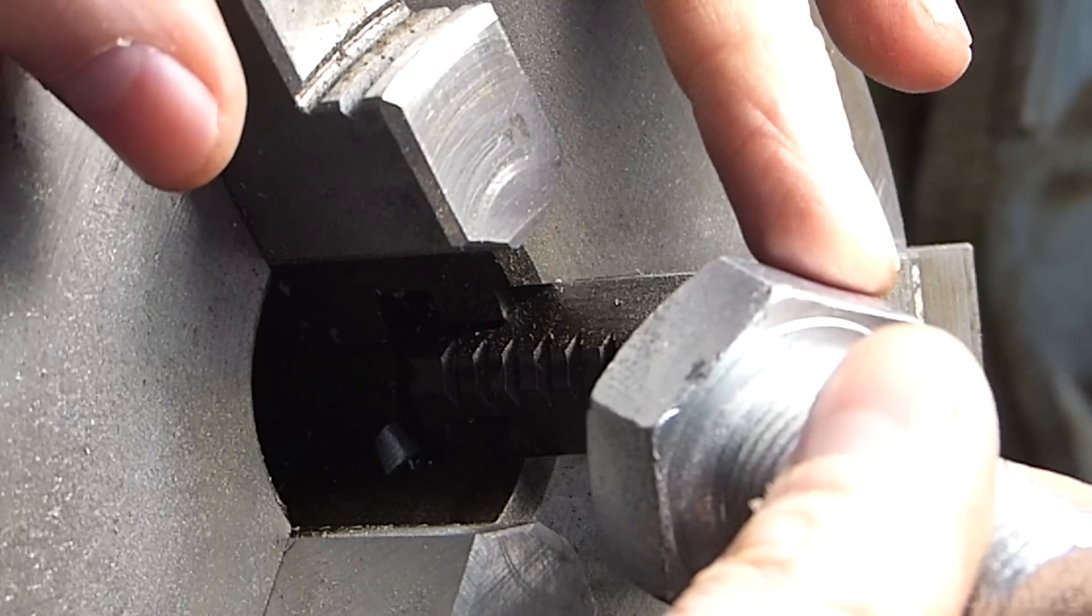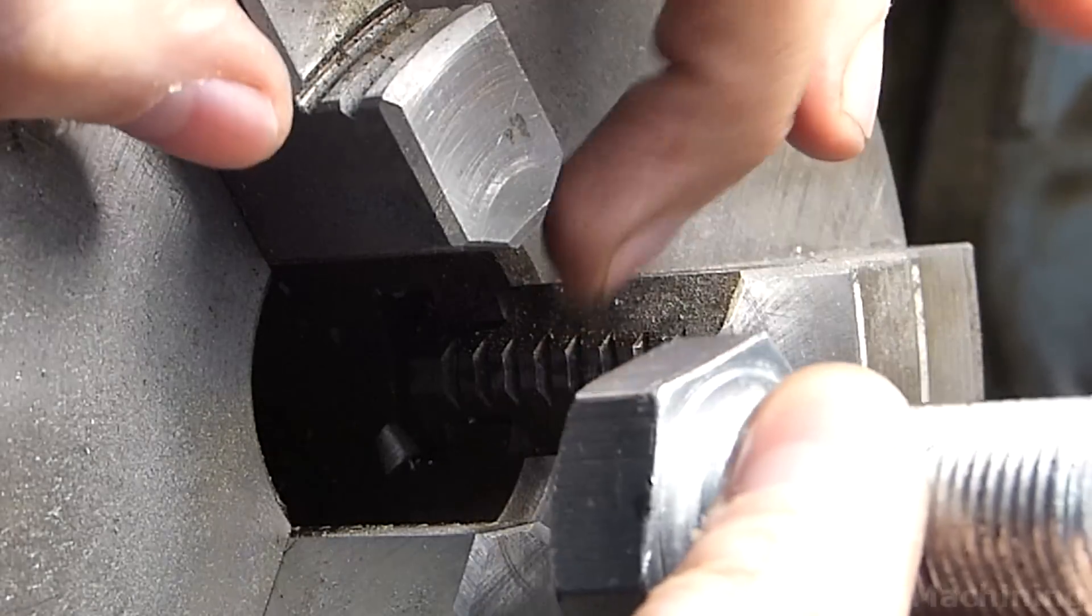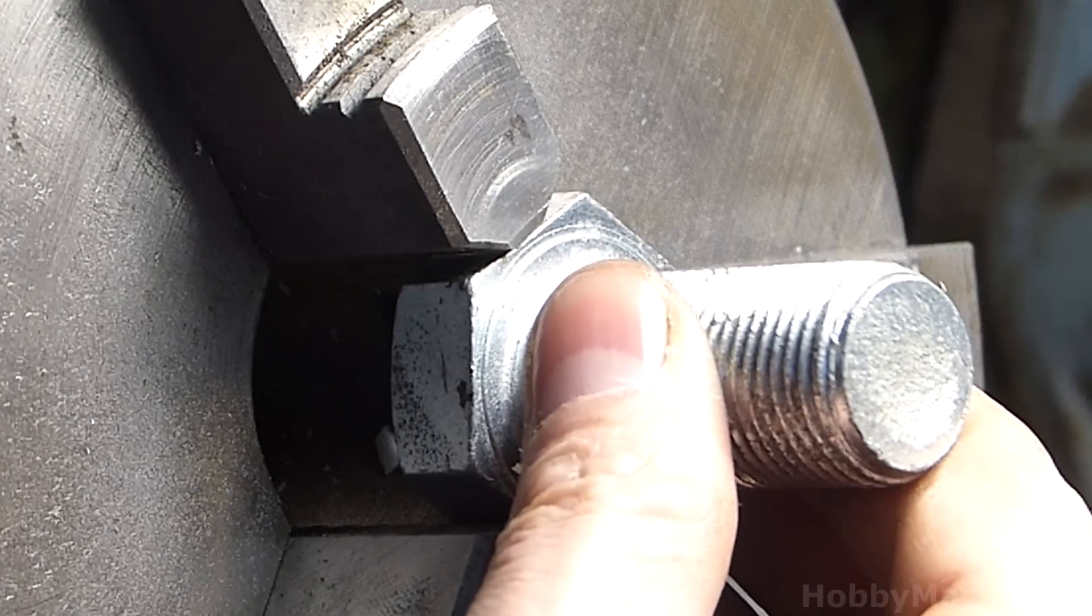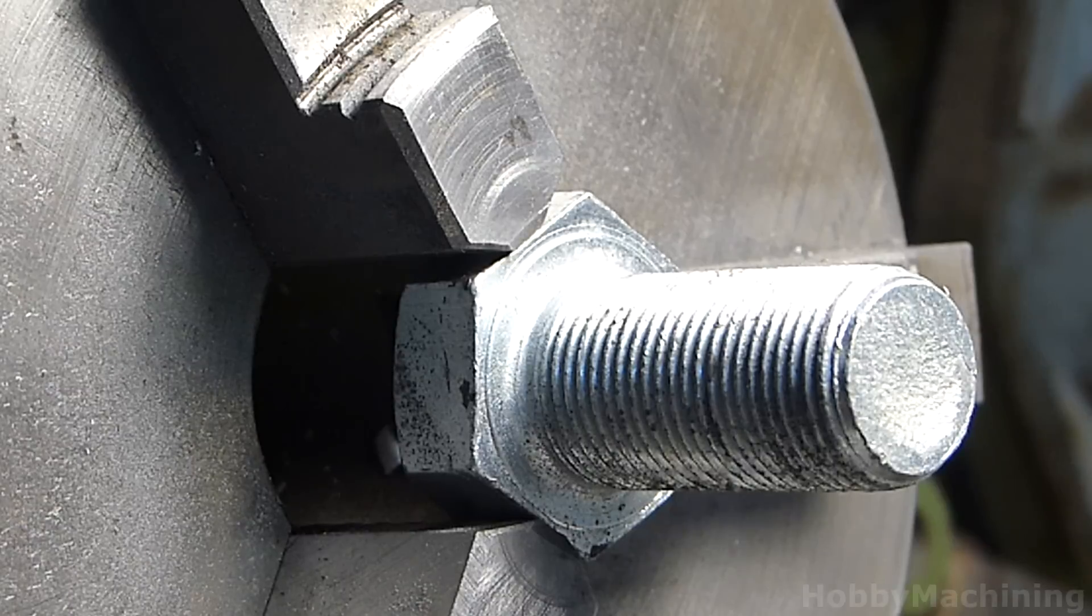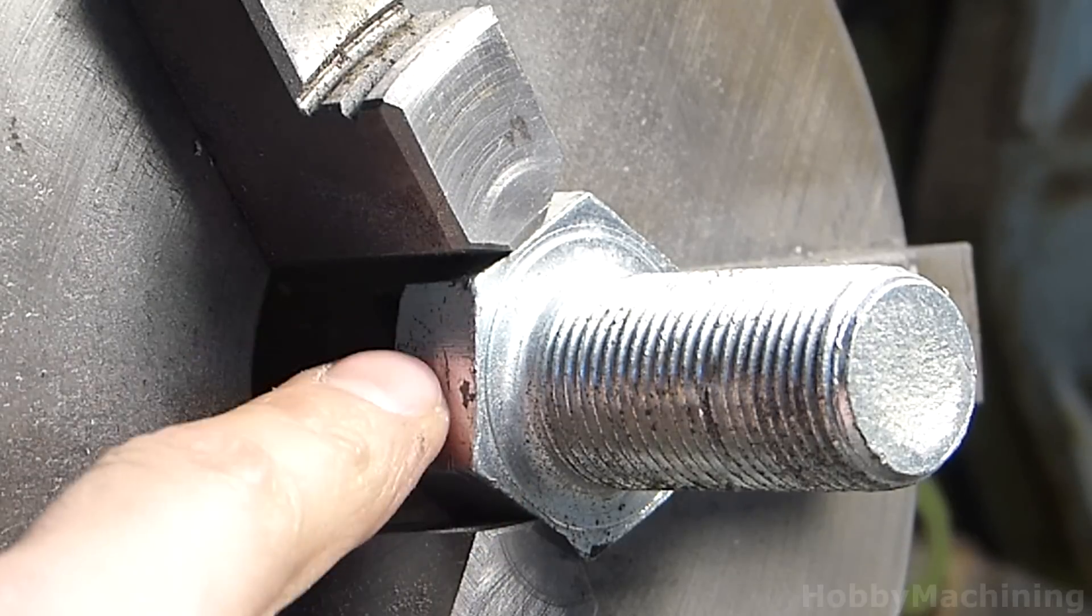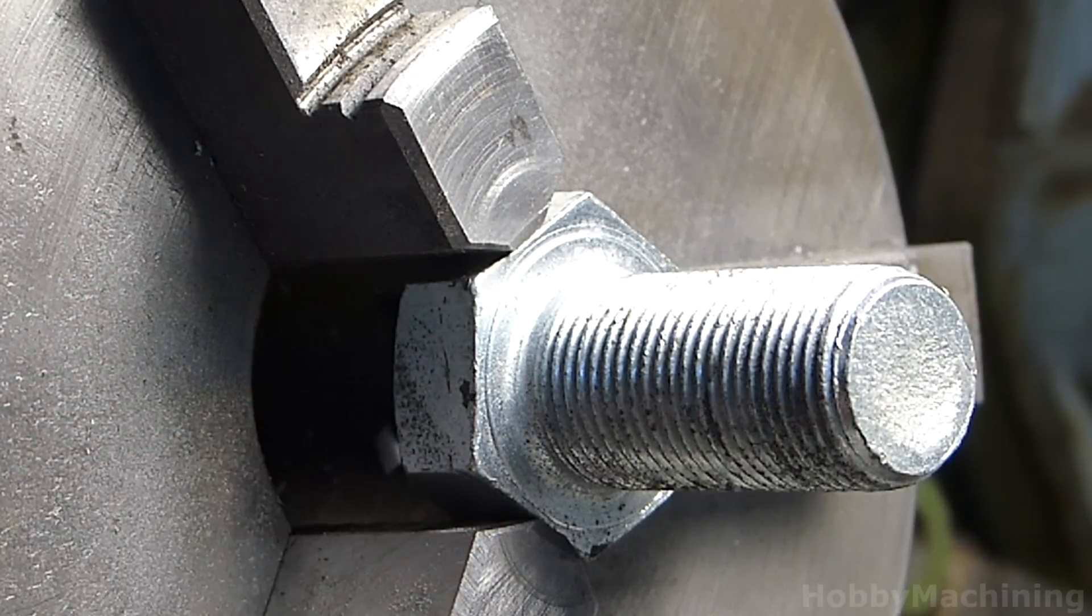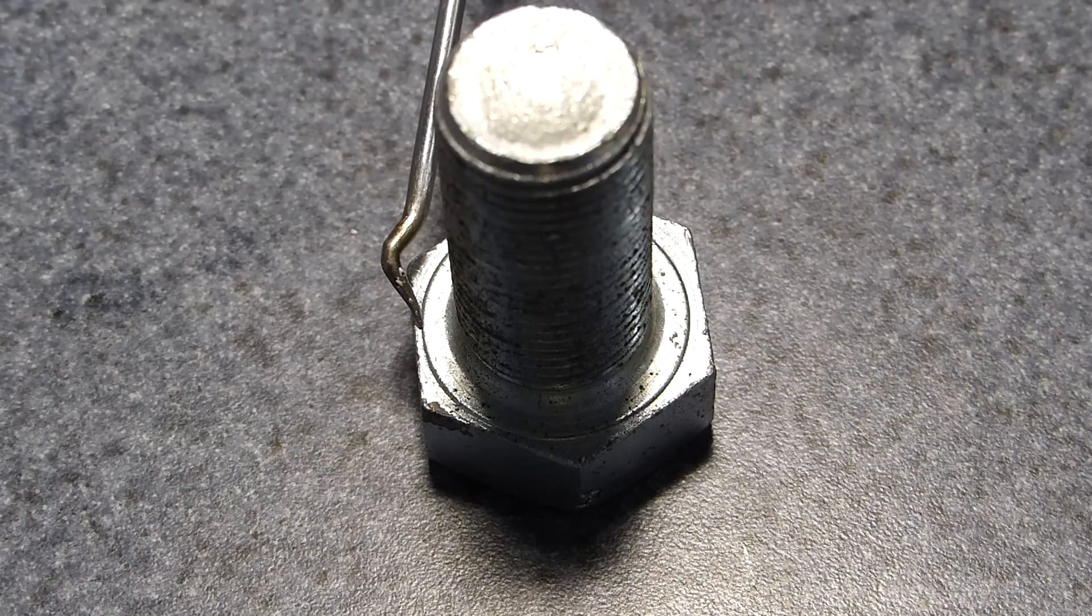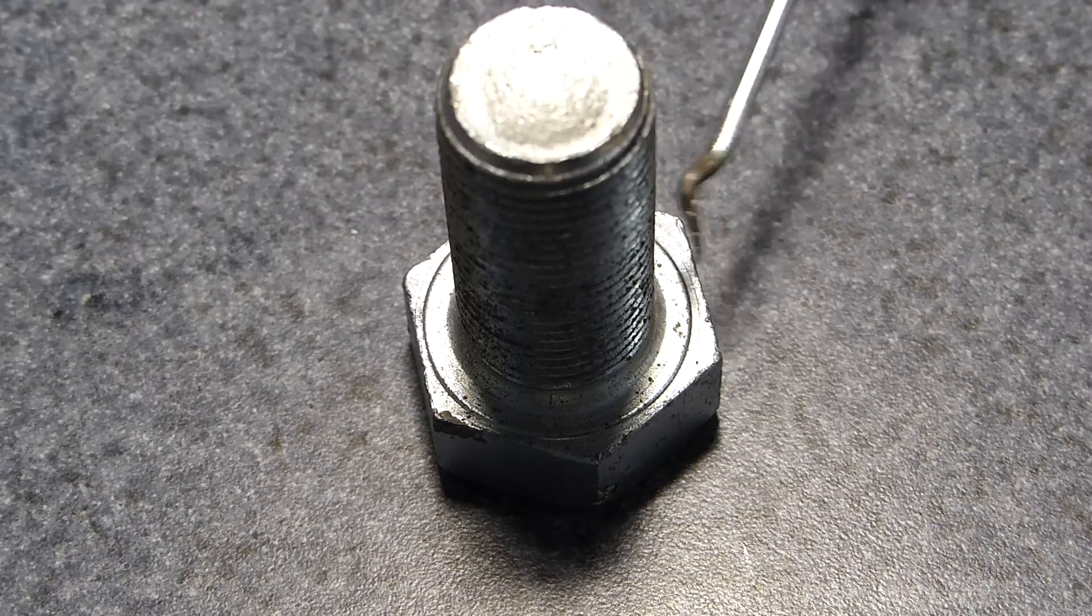While researching methods of chucking up threaded items, I found people who were interested in machining the other end of bolts, and they would simply chuck the hex head of the bolt in the three-jaw chuck, which fits very nicely. The problem that I found with this is that the head of the bolts are typically not concentric. You can see pretty clearly here that there's a lot less material on this side than there is on this side.